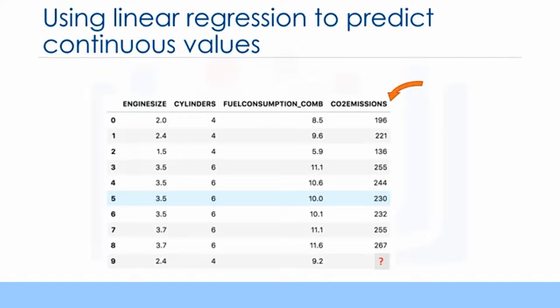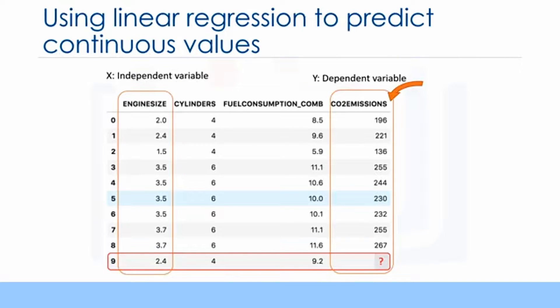Quite simply, yes. We can use linear regression to predict a continuous value such as CO2 emission by using other variables. Linear regression is the approximation of a linear model used to describe the relationship between two or more variables. In simple linear regression there are two variables, a dependent variable and an independent variable. The key point in the linear regression is that our dependent value should be continuous and cannot be a discrete value.